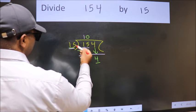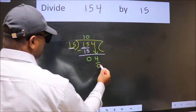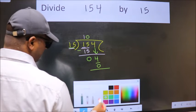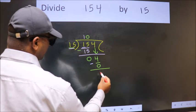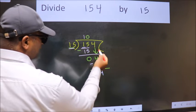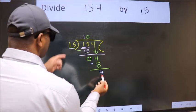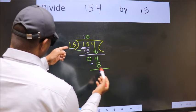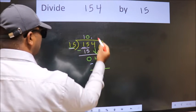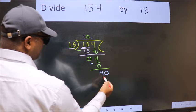So 15 into 0 equals 0. Now we subtract, we get 4. Over here we did not bring any number down, and 4 is smaller than 15, so now we can put dot and take 0, so 40.